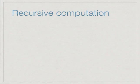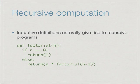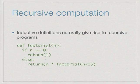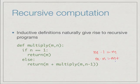An inductive definition has a natural representation as a recursive computation. Here is a simple Python implementation of factorial: it takes n, and if n is 0 it returns 1, otherwise it returns n times factorial(n-1). This is exactly the inductive definition directly translated as recursive computation. Similarly for multiplication: if n is 1 we return m, otherwise we add m to the result of multiplying m by (n-1).